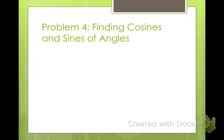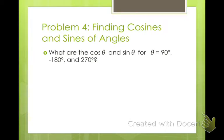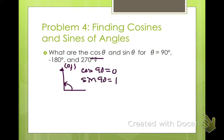Finding cosines and sines of angles. What are the cosine θ and sine θ for θ equals 90 degrees, negative 180 degrees, and 270 degrees? Well, if we think about 90 degrees on the unit circle, we look at our initial side, our terminal side. What is the value of this point? Well, that's (0, 1). So what is the cosine? Cosine is always the first value. So cos 90° = 0. And sin 90° = 1. That's the second value. Pretty simple.